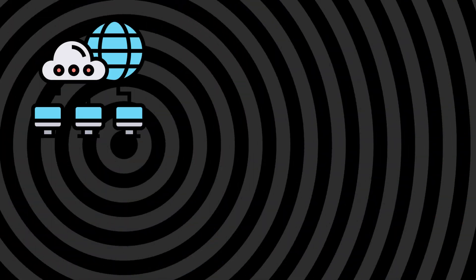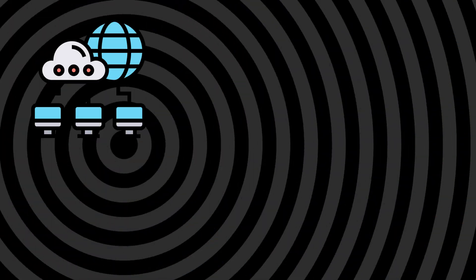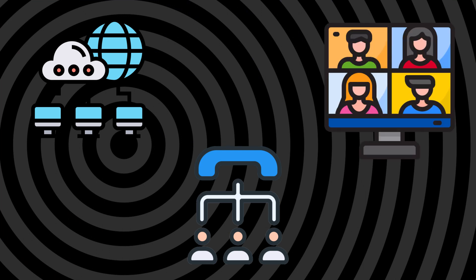Those networks were data networks. We would have a separate network for data, a separate network for telephone and voice, a separate network for audio-visual, a security system network. These have converged over the years.